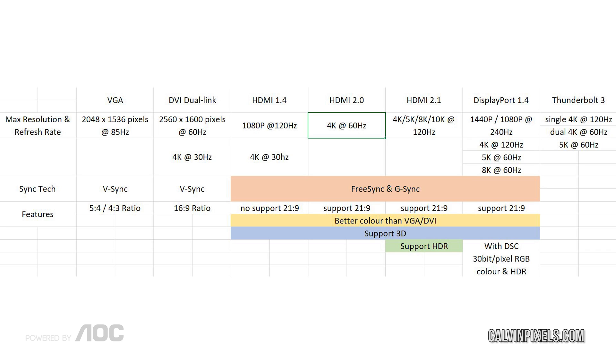Here is a simple table showing the resolution and frequency that each standard supports. More importantly for gaming, if you are looking for sync technology like FreeSync and G-Sync, go with HDMI or DisplayPort, because they support higher refresh rates at higher resolutions — great for the gaming experience. All you really need to know is: based on the variant or version, what resolution it supports, at what refresh rate, and what extra features it includes.